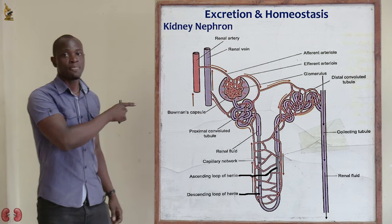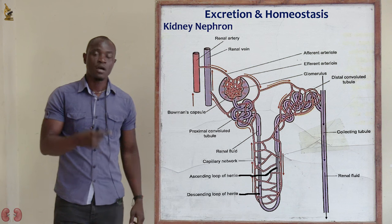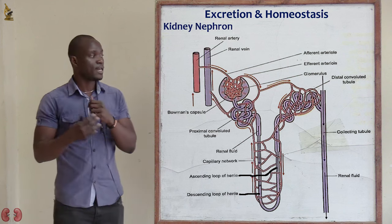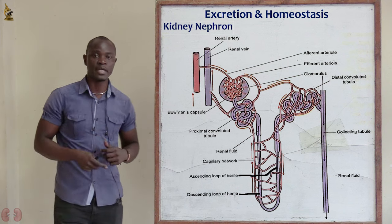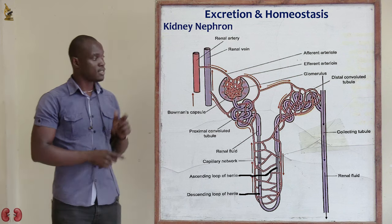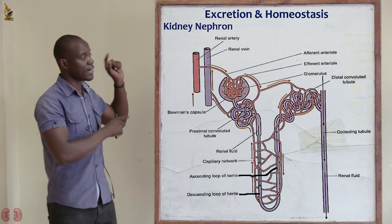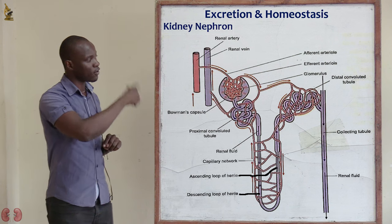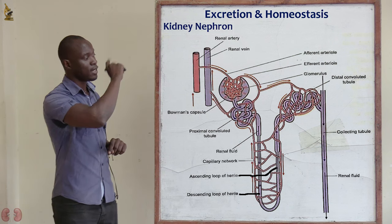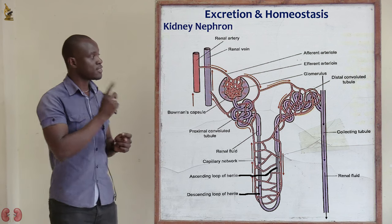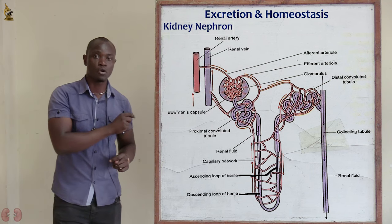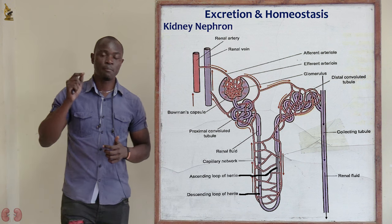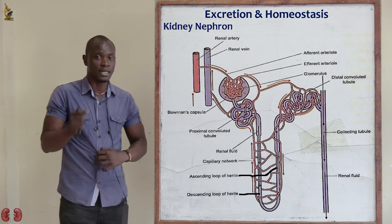It is here in this nephron whereby ultrafiltration takes place. Waste products from the blood are removed to form urine, and essential products are let to circulate into the body. It is also in this place whereby water reabsorption takes place. Excess water will be removed through the collecting duct and distal convoluted tube to form urine.